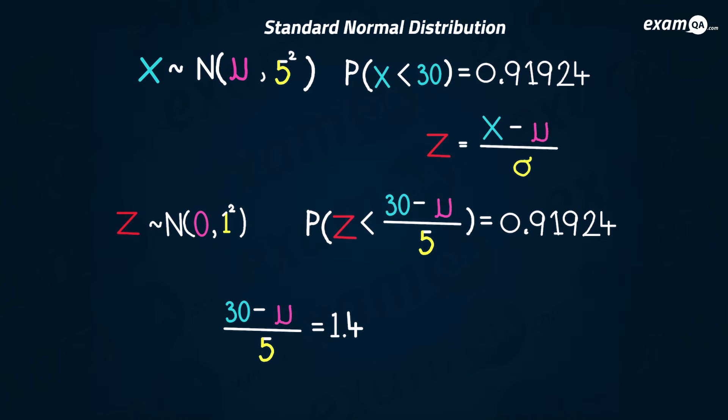Now we can work out what mu is — we've just got a little algebra to do. Pause the video and try it. You should have got mu = 23. I didn't go through the algebra steps since most people watching this video are in the second year of A-level.